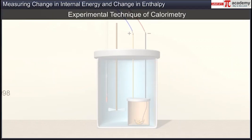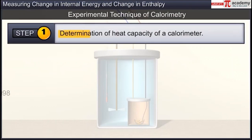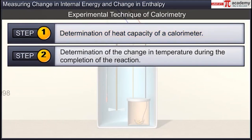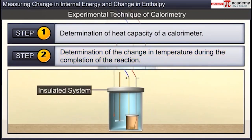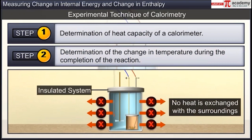The experimental technique of calorimetry involves two steps. The first step is the determination of heat capacity of a calorimeter. The second step involves the determination of the change in temperature during the completion of the reaction, assuming that it is an insulated system and no heat is exchanged with the surroundings.